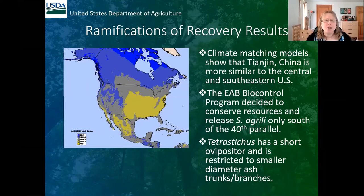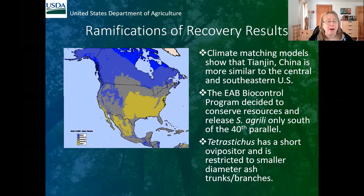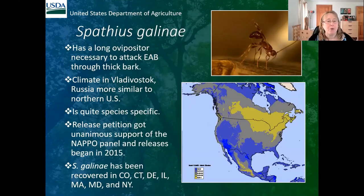Climate modeling and climate matching showed that Tianjin, China, where we collected Spathius agrili, is much more similar to the southern and central United States. We had been releasing them in the north where they weren't establishing. The emerald ash borer program decided to conserve resources and only release Spathius agrili south of the 40th parallel. But there was a problem: Tetrastichus planipennis has a short ovipositor and can only oviposit through smaller-diameter ash trunks. We needed a bigger insect like Spathius agrili, and fortunately we found one in Spathius galinae.